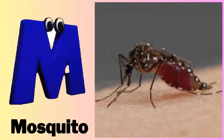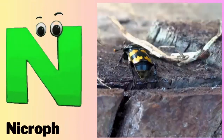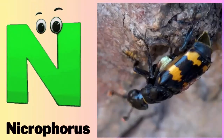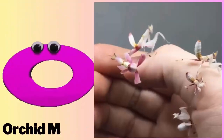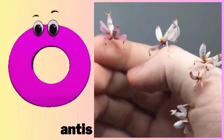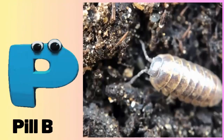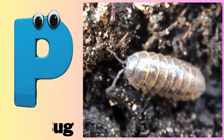M - M for Mosquito. N - N for Nicrophorus. O - O for Orchid Mantis. P - P for Pill Bug.